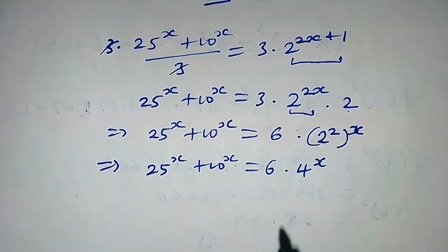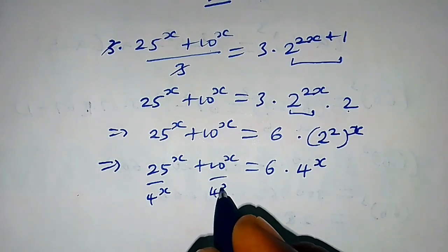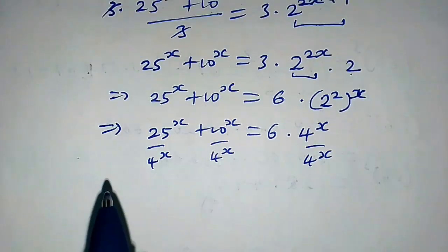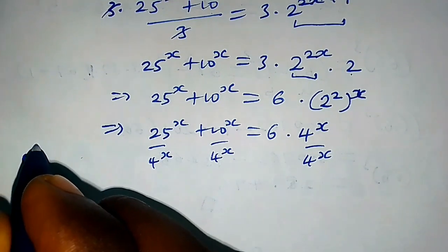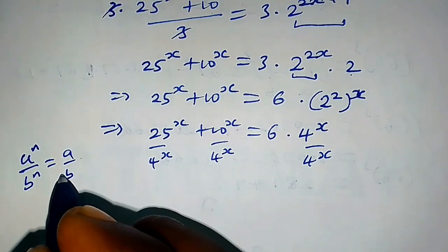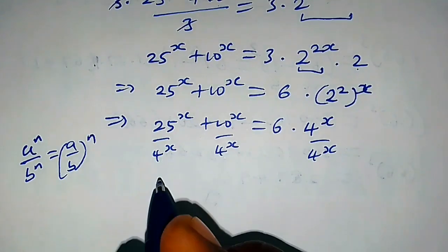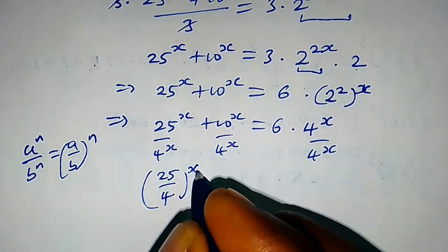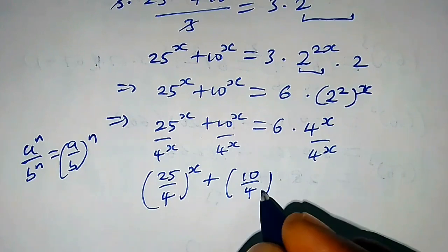Dividing both sides by 4 raised to the power x, we get: recall that whenever we have a raised to the power x over b raised to the power x, we can write it as (a over b) raised to the power x. Using this property, we get (25 over 4) raised to the power x plus (10 over 4) raised to the power x equals 6.